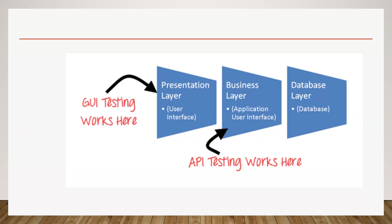For example, Gmail login has a beautiful user interface. When you hit the URL you can see the username field, the password field, and a login button. Users interact with the presentation layer. But when it comes to API testing, we move to the business logic layer — it's just code, and API testing works at that level.